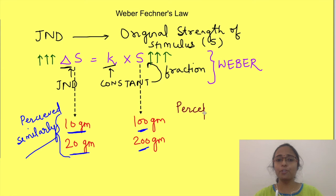That means perception of intensity of a stimulus does not directly correlate with the physical magnitude of the stimulus. Like here, physical magnitude is 10 grams and 20 grams, but the perception is same for both.